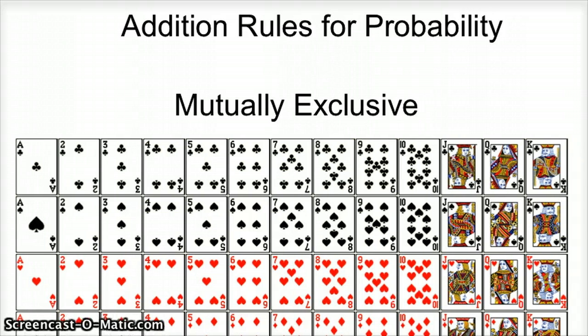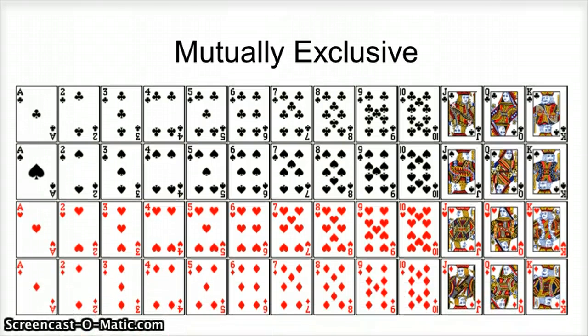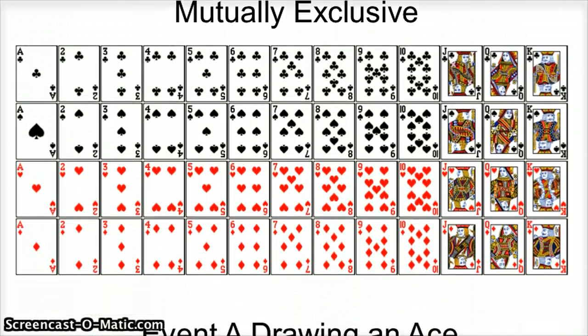Okay, so first off, what I have here to understand mutually exclusive and what that means, I have here all the cards in a standard 52 card deck. So that's every card from Ace, 2, 3, 4, 5, on up to Jack, Queen, King. There's 13 clubs, 13 spades, 13 hearts, and 13 diamonds.